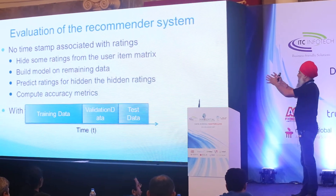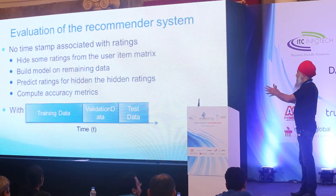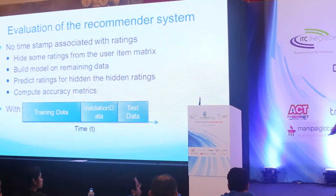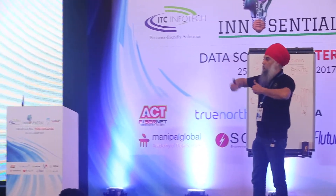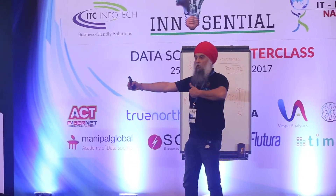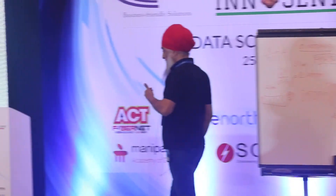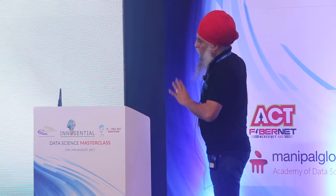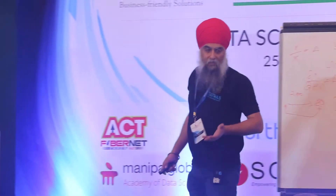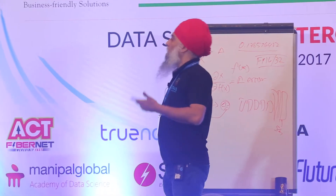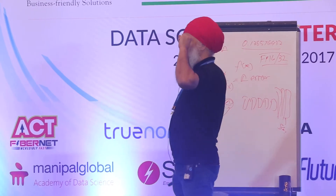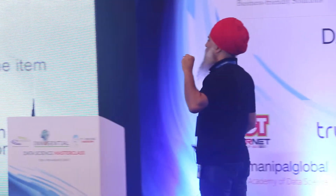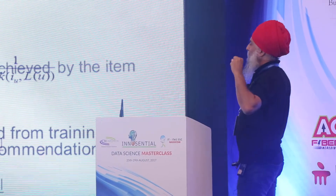I've got validation data, which is my second period, and test data, which is the third period. So it's on time that you're doing the slicing of your training, test, and validation sets. If you don't have the timestamp or you don't want to take it into account, then you can just keep a random set of ratings out of the user-item matrix and utilize that.